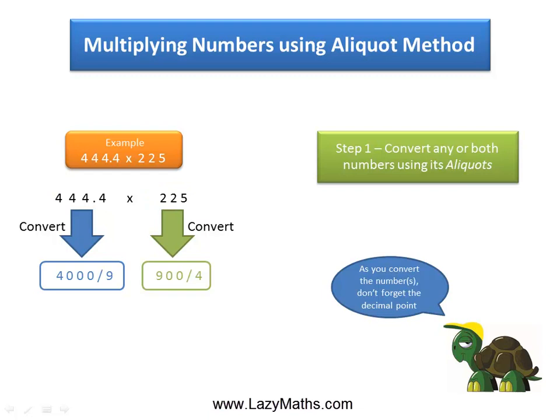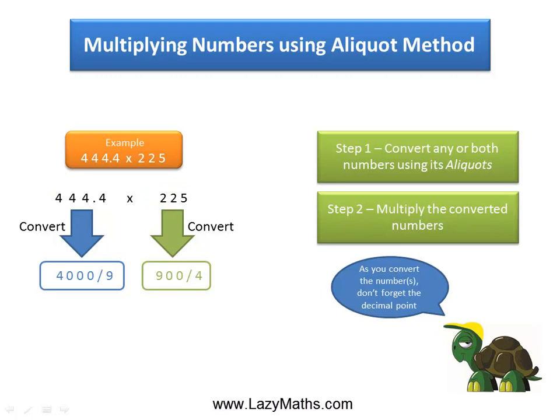Multiplying 4000 divided by 9 with 900 divided by 4, we can cancel the 9s and the 4s, and we get an approximate answer of 100,000.